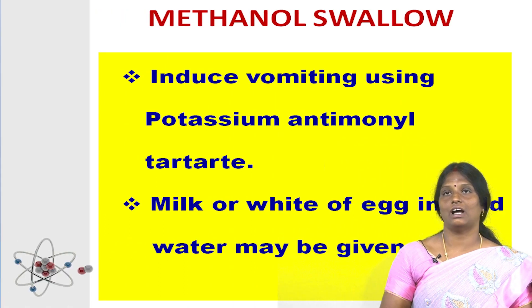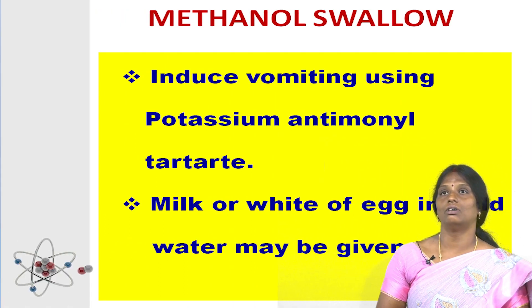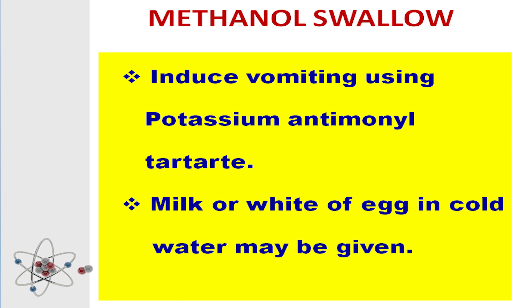When methanol, that is methyl alcohol, is swallowed, vomiting is induced by administering tartar emetic, that means potassium antimony tartrate in salt water. After vomiting, milk or white of egg in cold water may be given. When phenol is drunk, 50% alcohol may be given. By adding 50% alcohol with 50% water, we can give it for phenol swallowing. Then vomiting is induced. Finally, milk or white of egg in water can be given.